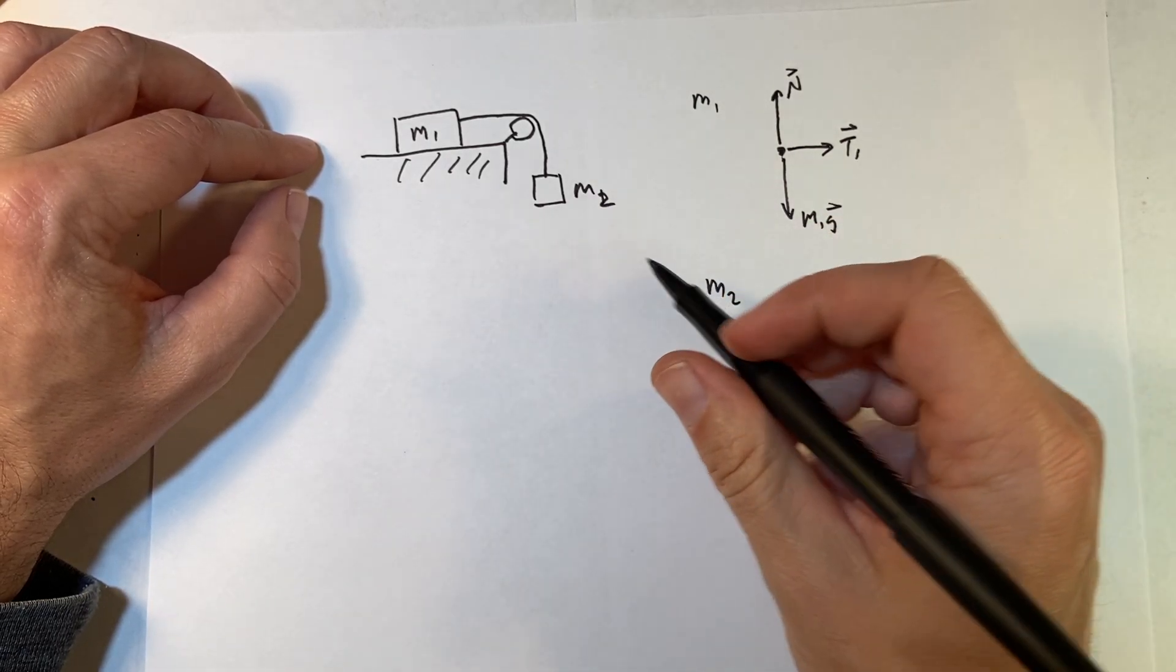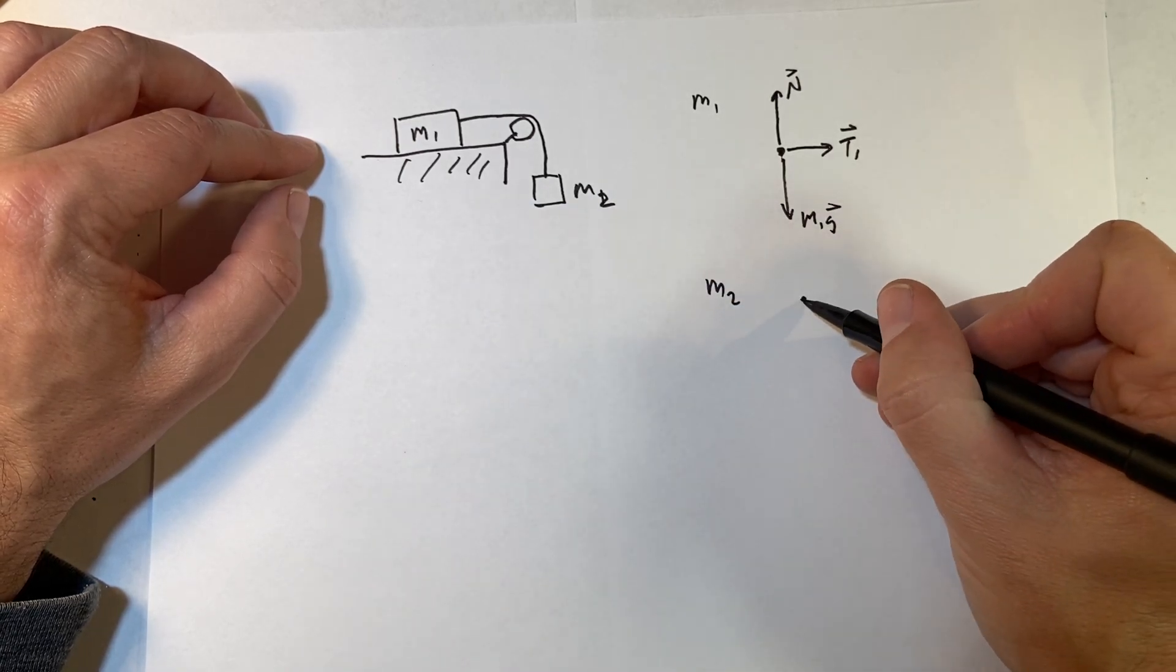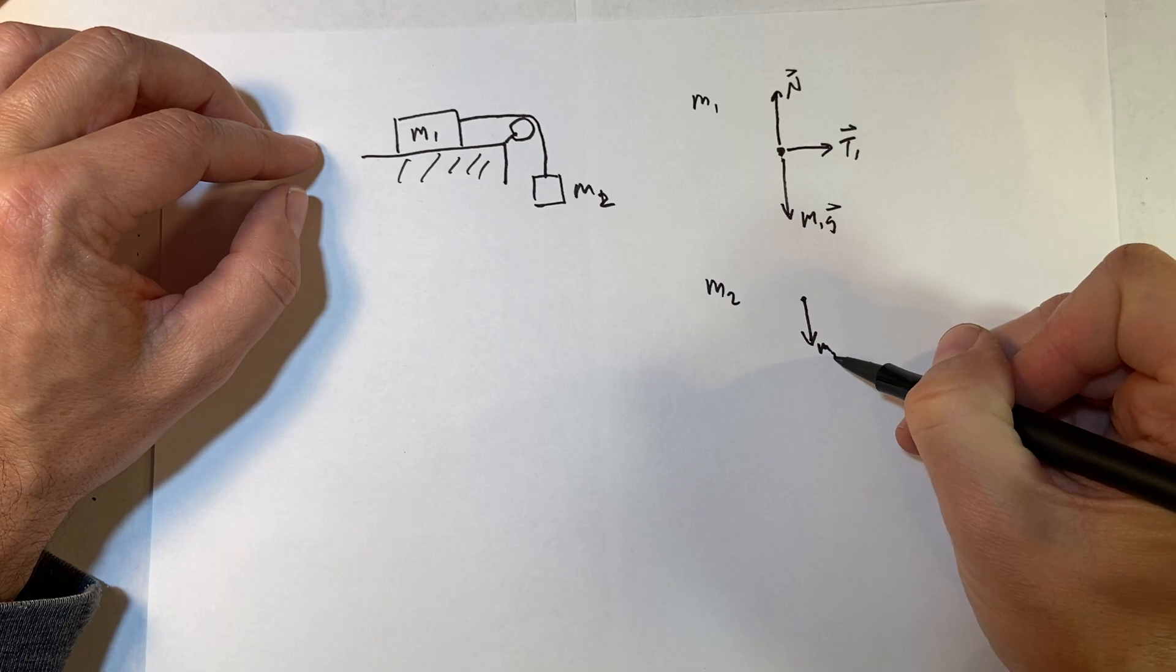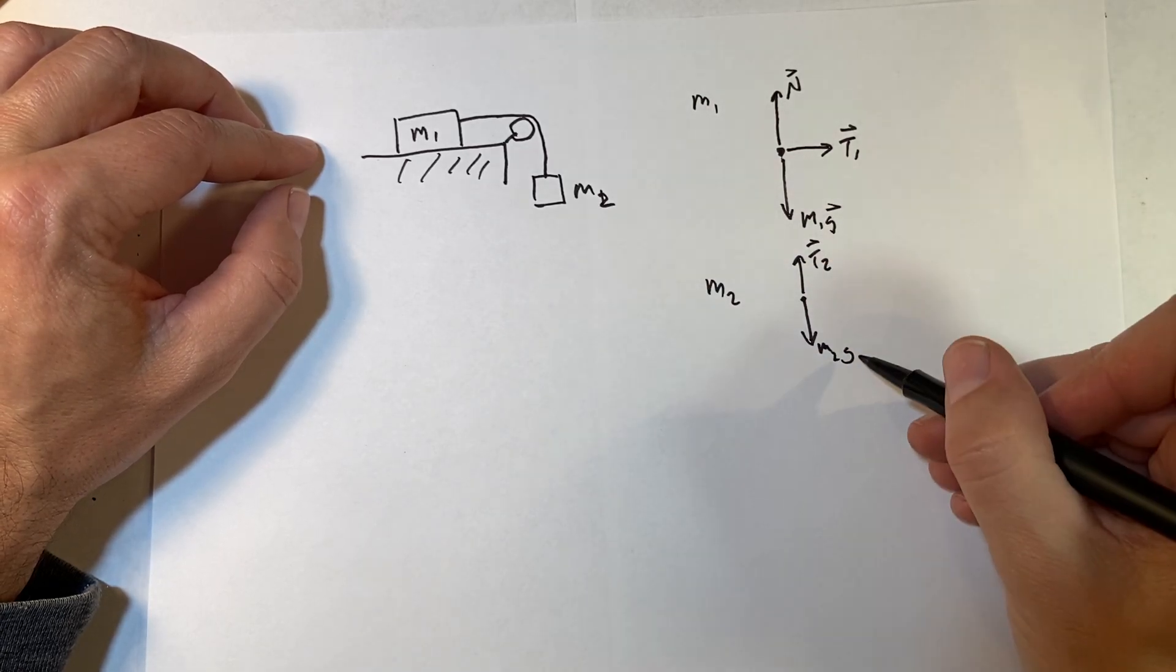For mass 2, I only have two forces acting on it, because there's no surface. So it only has the gravitational force, m2g, and the tension, I'll call it t2, like that.